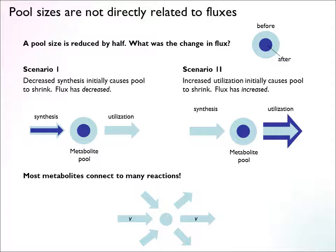On top of this, most metabolites connect to many reactions — a large number of enzymes might produce or consume the metabolite. This makes it very difficult to say which reaction has changed when the metabolite pool has changed. So pool size is not a great measure for determining fluxes.